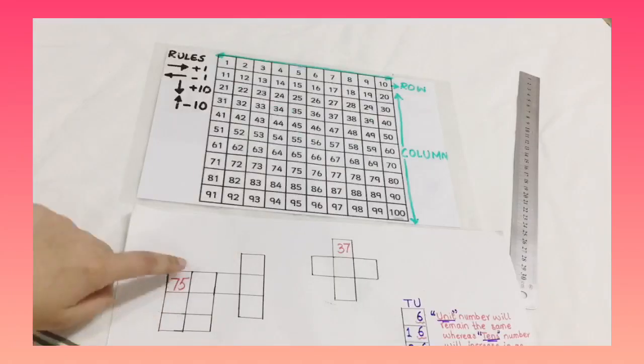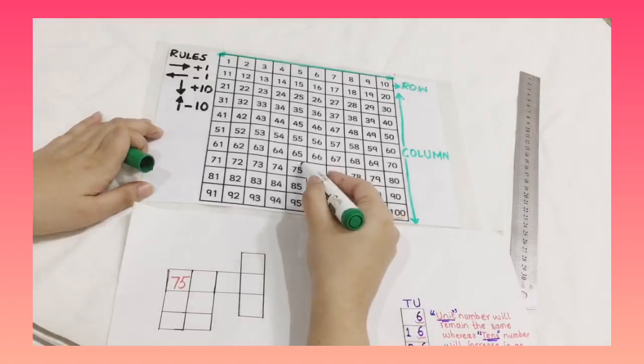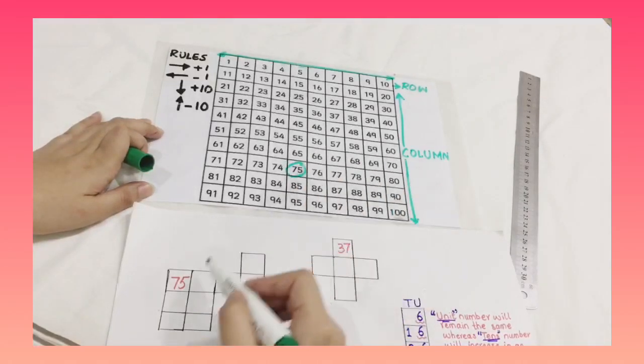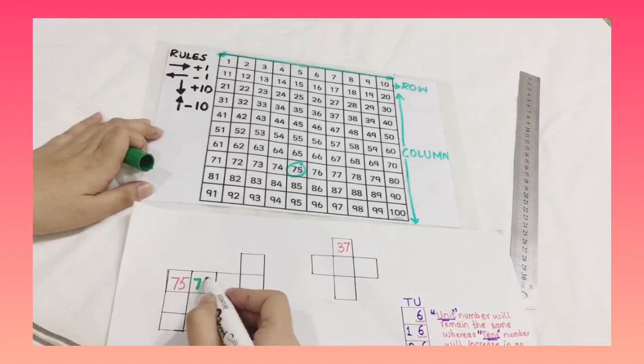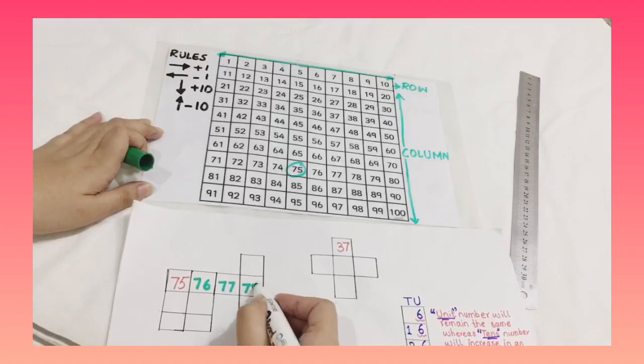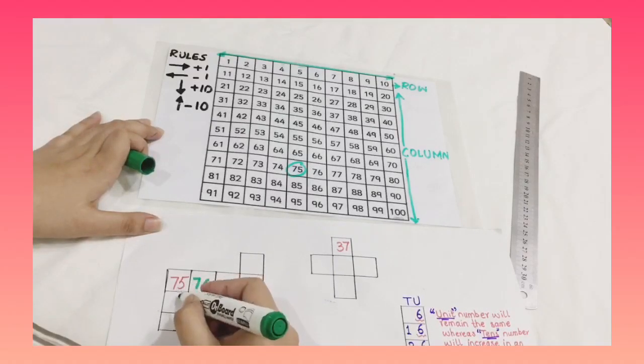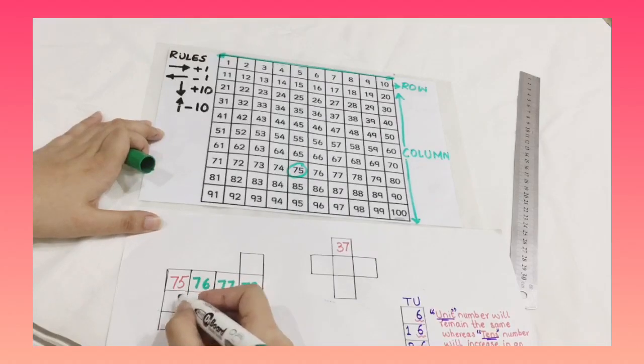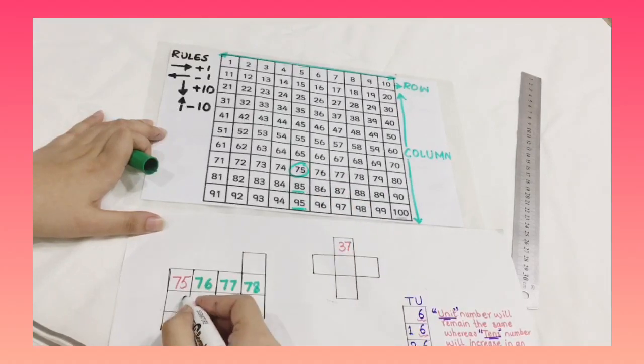To solve this shape we are going to identify 75 in the 100 square chart. This is 75. Now if we are moving in a row this is simply like this: 76, 77, 78. Now 75. That means in this column the unit numbers will remain the same. Look here it is 85, 95. The unit numbers are the same.